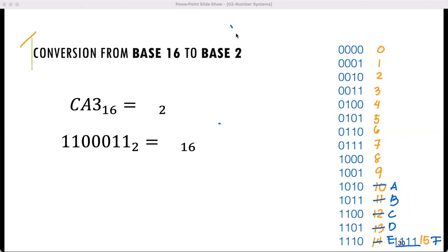So let's convert. Now for CA3 base 16, to convert that to base 2, let's check first what is C, what is A, and what is 3. So C here is 1100, A here is 1010, and 3 is 0011.